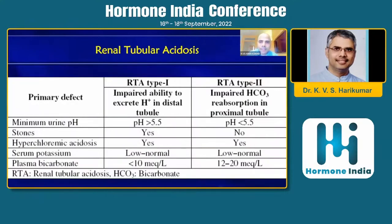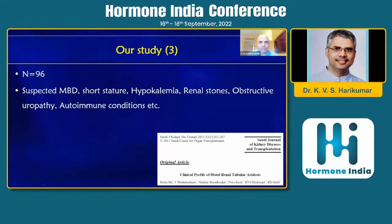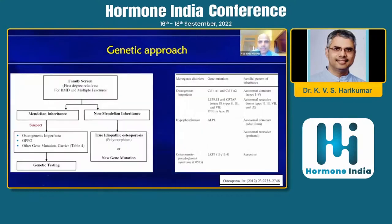Another important condition is renal tubular acidosis (RTA), which generally comes in the pediatric to adult age group. Fasting urine pH determines distal versus proximal RTA; bicarbonate and stone disease are usually seen in the distal form. Our study of about 90 patients with the clinical profile of distal RTA — suspected metabolic bone disease, recurrent unexplained hypokalemia, renal stones — showed that whenever such patients come up you should be investigating them for RTA.